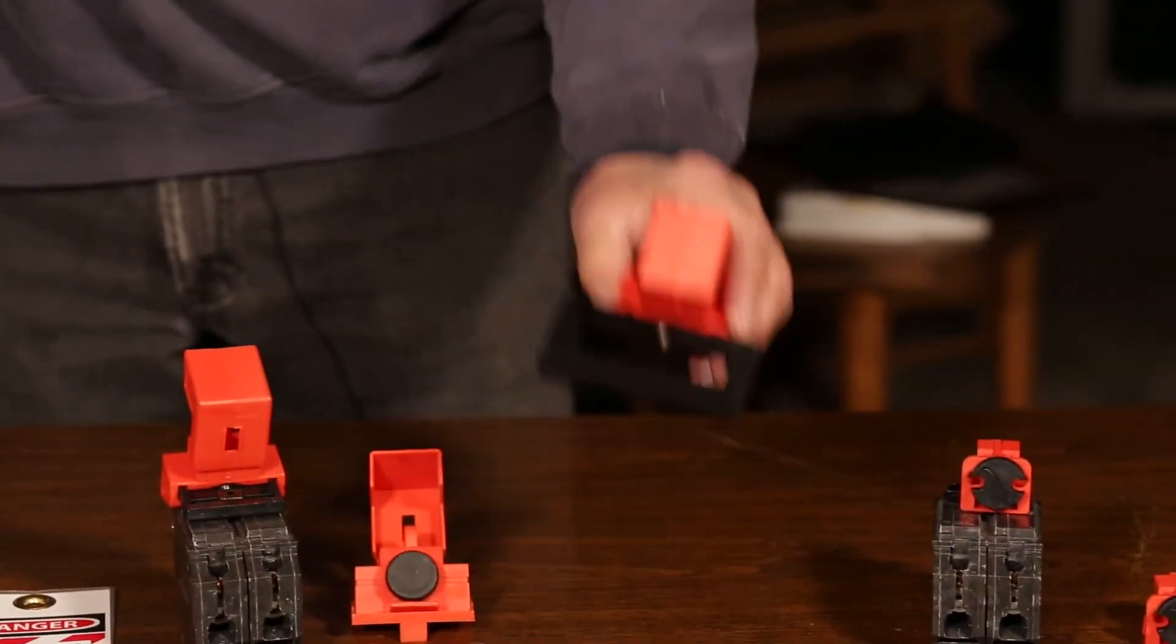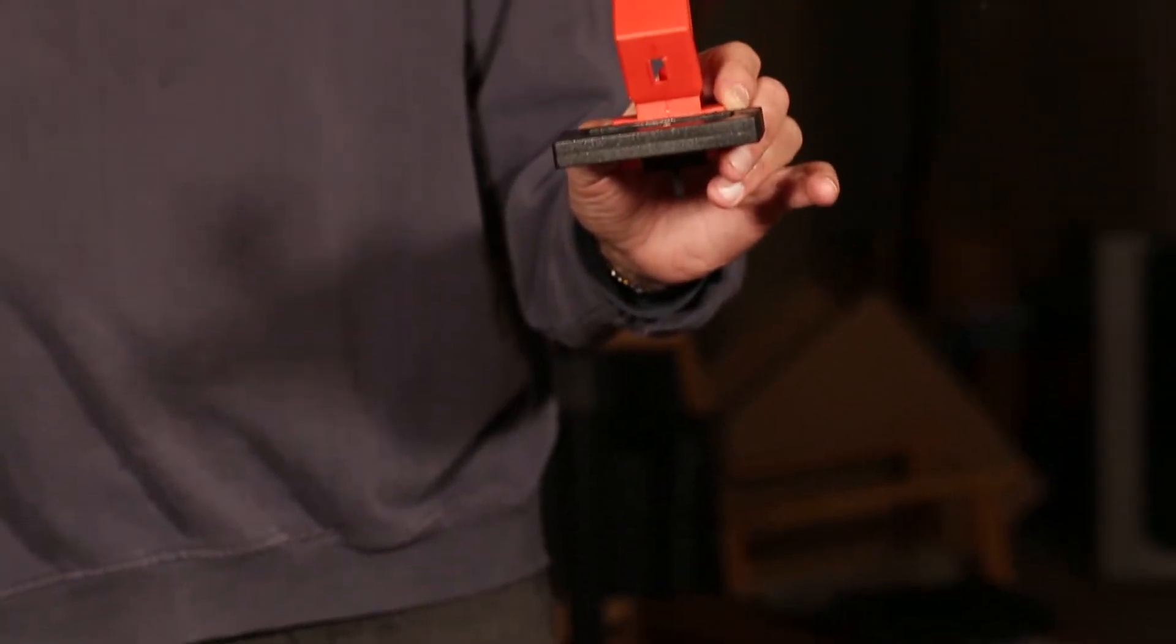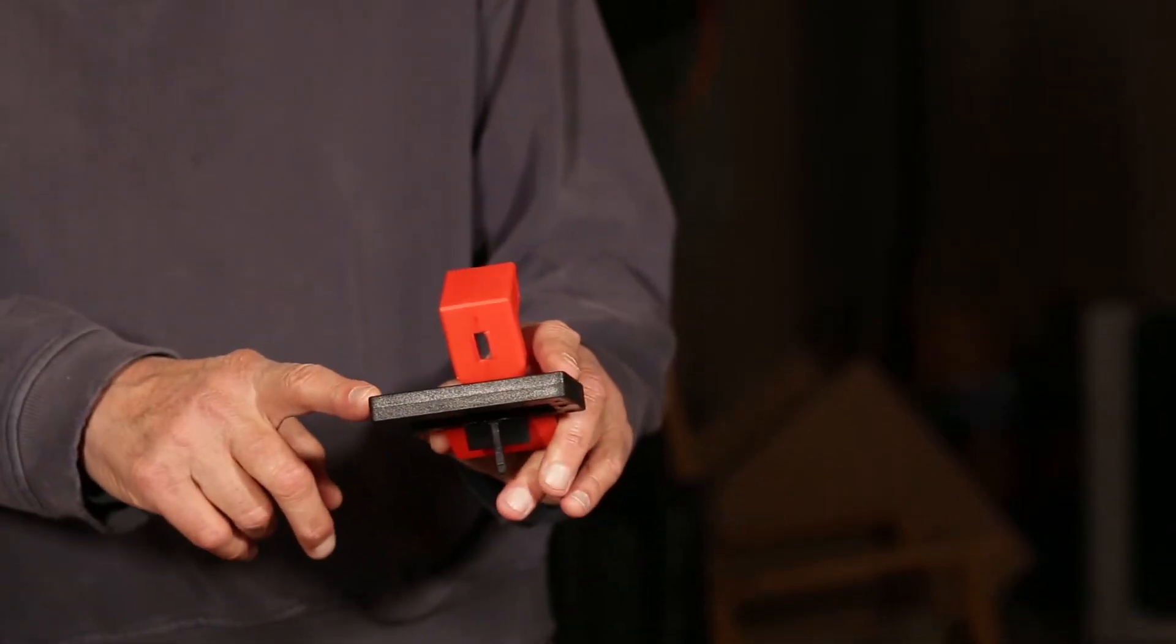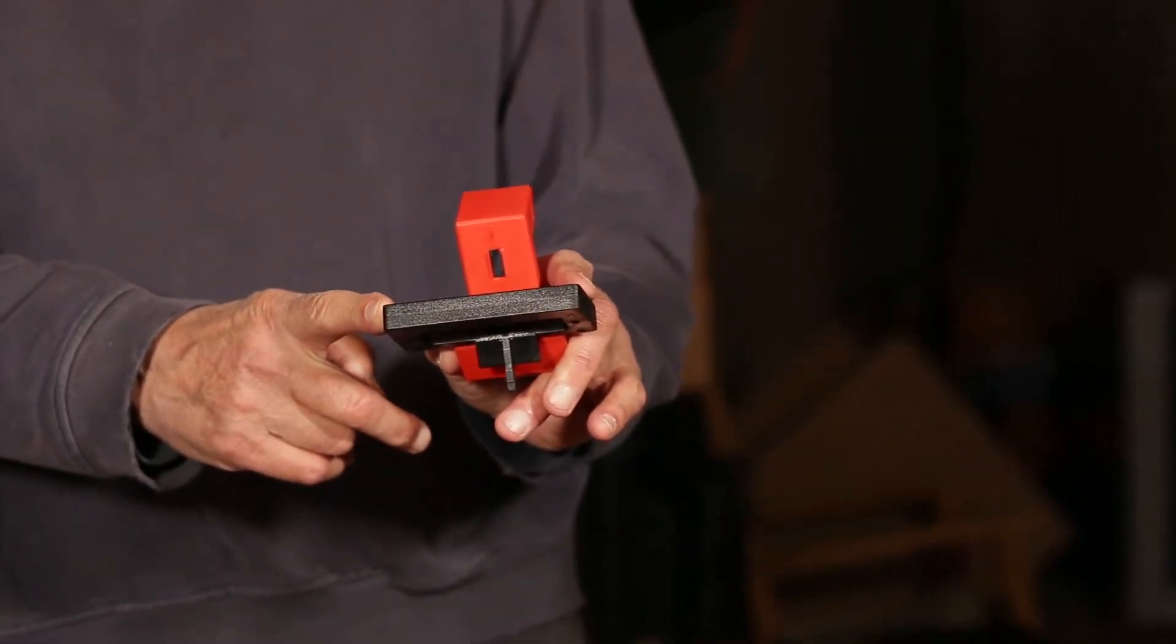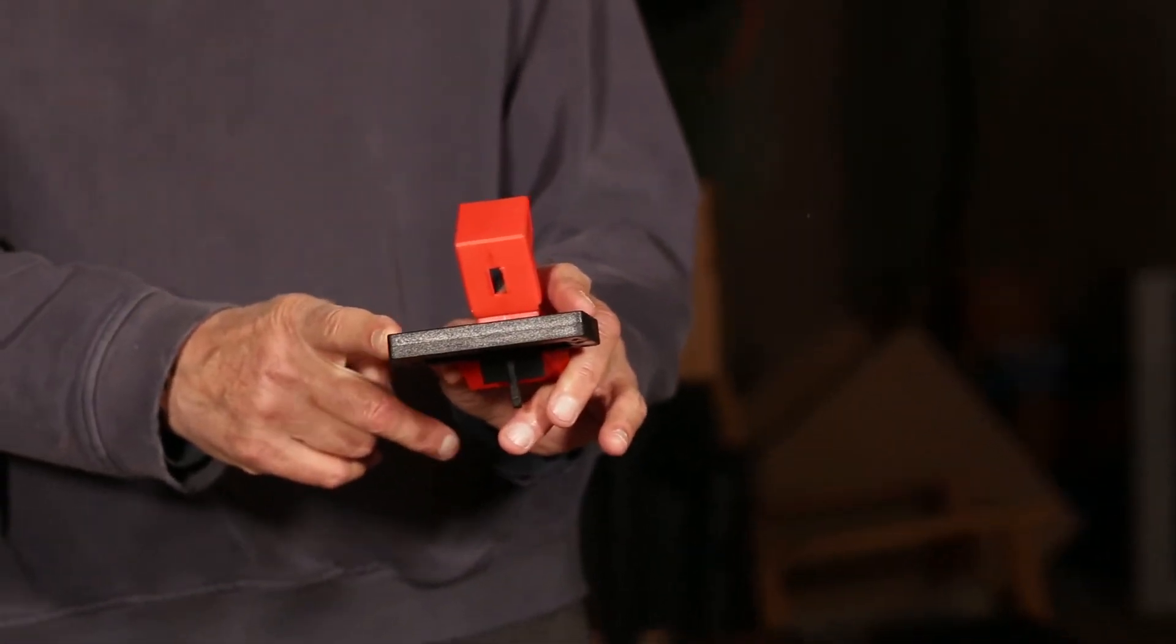There's a third device for panel lockouts and circuit breaker mains. These are actually three inches wide so they'll accept the big panels that you have in an electrical panel.